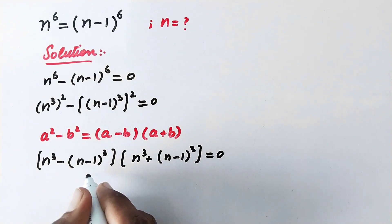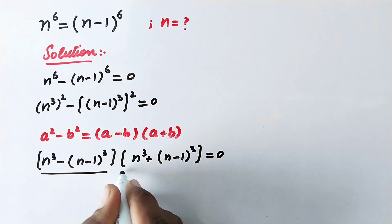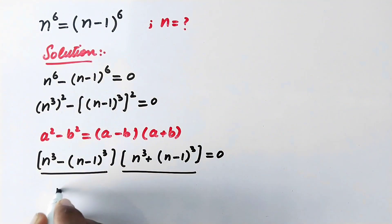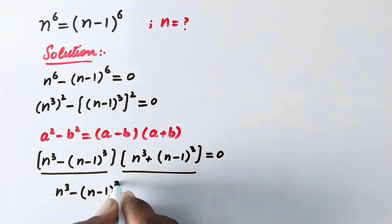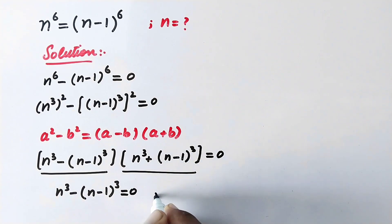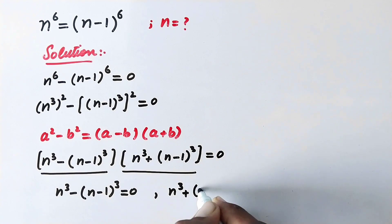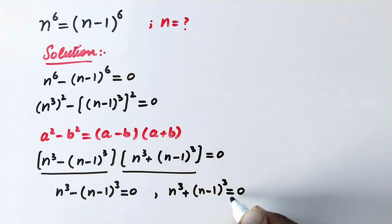Now we can use the zero product property. Since each factor is equal to 0, we can set n to the power 3 minus n minus 1 to the whole power 3 equal to 0, and similarly for the other factor.